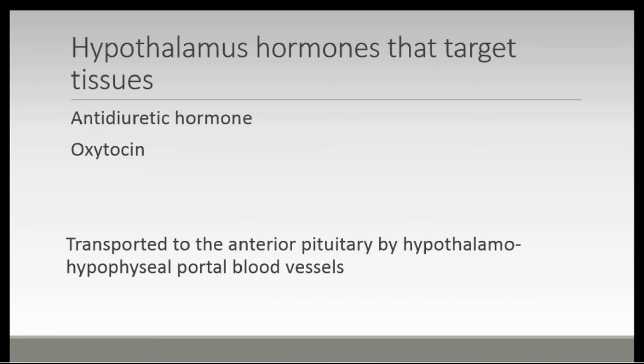As mentioned, the hypothalamus produces other hormones that target tissues directly, and these include antidiuretic hormone and oxytocin. The seven hormones secreted by the hypothalamus are transported to the anterior pituitary, while antidiuretic hormone and oxytocin are stored in the posterior part of the pituitary.